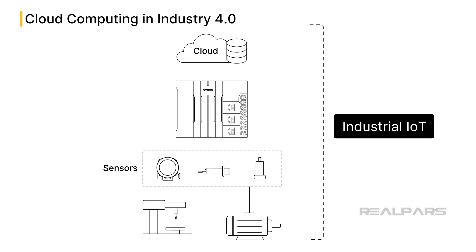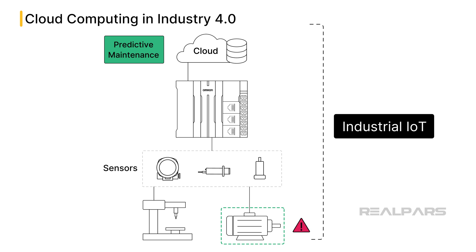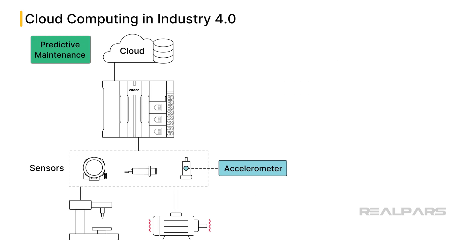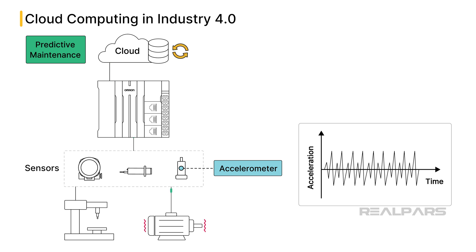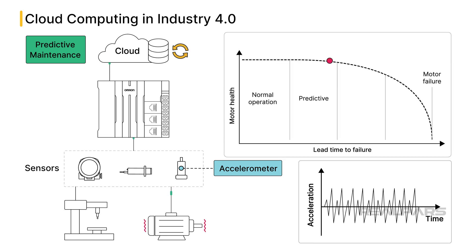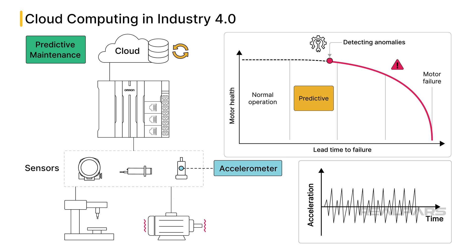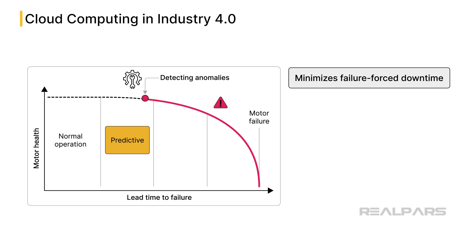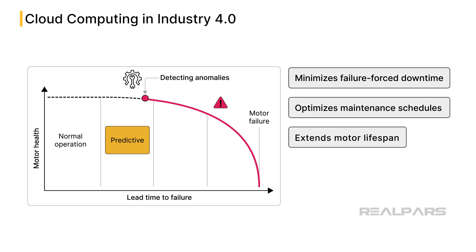Let's look at an example of cloud computing used in predictive maintenance and manufacturing. A typical industrial manufacturing plant has several electrical motors performing various tasks. Motor failure results in downtime and lost productivity, making predictive maintenance via cloud computing algorithm analysis invaluable. Measured motor vibration via an accelerometer sensor is analyzed to predict potential motor failure before it occurs. The accelerometer collects vibration data sent to the cloud, where advanced algorithms analyze patterns and deviations from normal operating conditions. By detecting anomalies, the system can predict when a motor will likely fail, allowing maintenance teams to address the issue proactively. This minimizes failure-forced downtime, optimizes maintenance schedules, extends the lifespan of the motors, and improves plant efficiency and reduces costs.